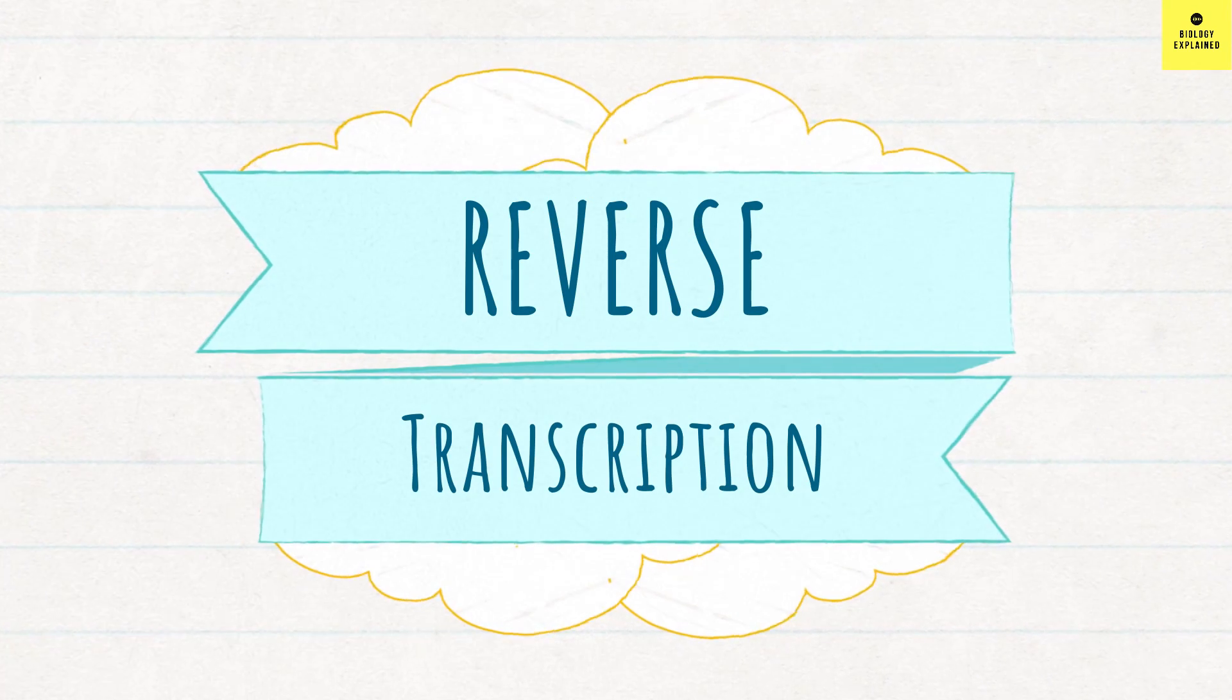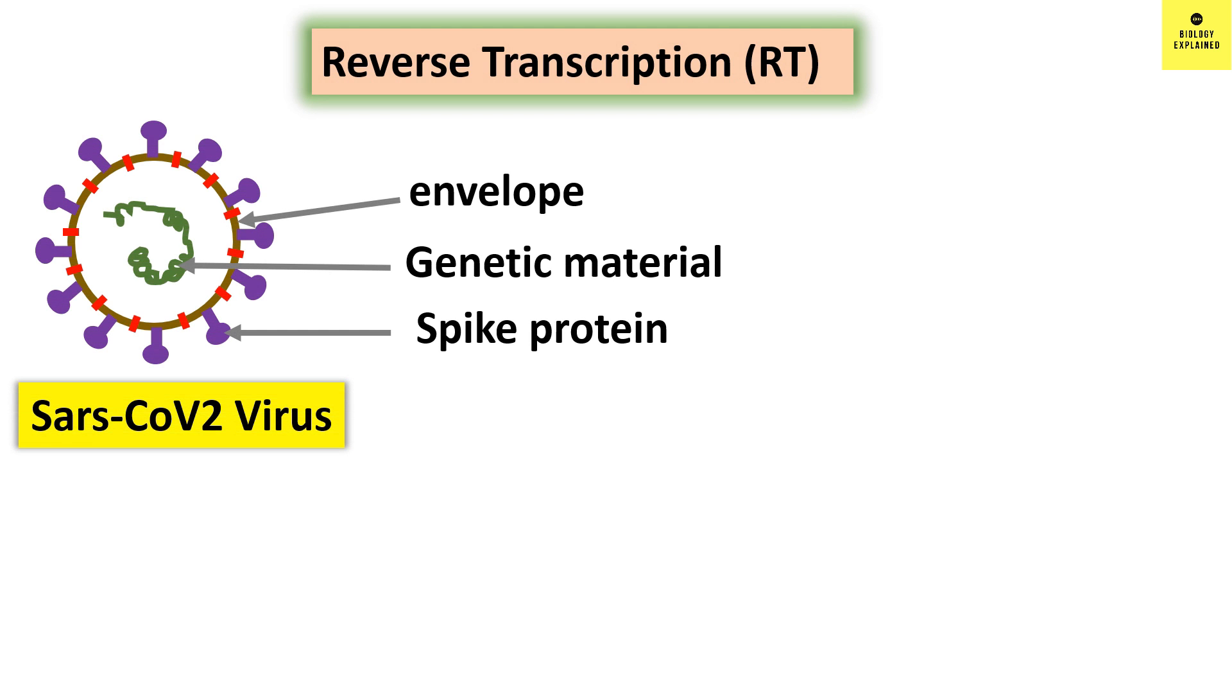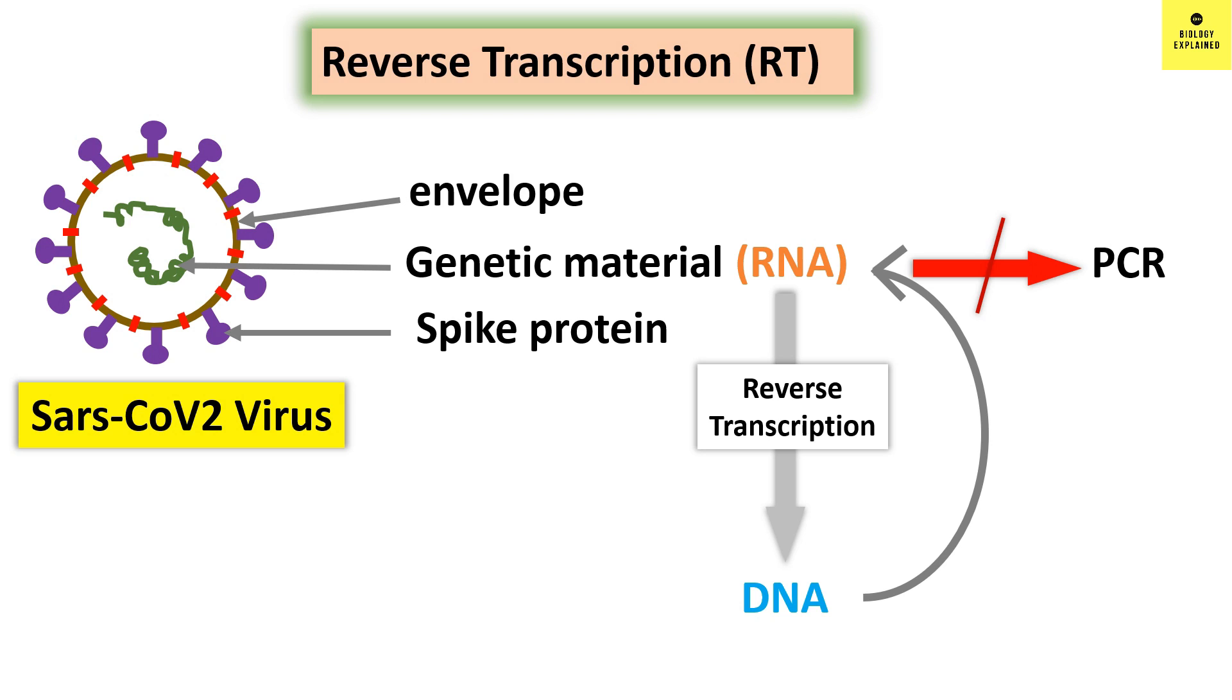Next is RT which stands for reverse transcription. By this time, you all know that SARS-CoV-2 virus has RNA as their genetic material. However, to perform PCR, we cannot use RNA. RNA needs to be converted to DNA. And this process of conversion of RNA to DNA is known as reverse transcription. Remember, DNA is generally converted to RNA in our body and this process is called transcription. Since here, opposite happens, that is RNA is converted to DNA, this process is called reverse transcription.